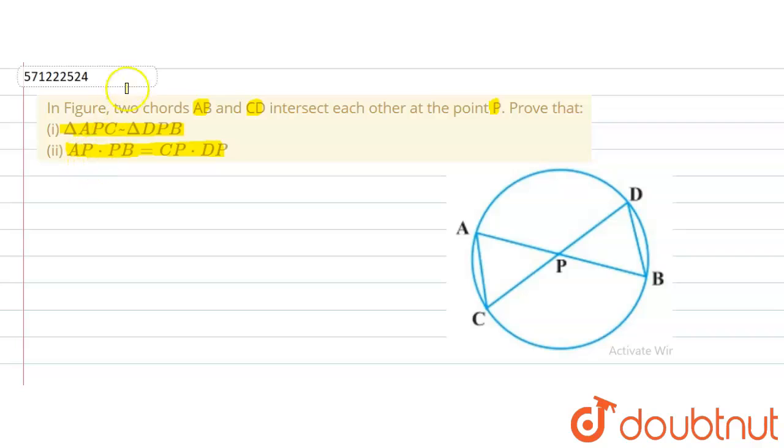As it can be observed from the second part, if we observe it closely, we can see that what it actually means is AP divided by DP or this DP can come to the left hand side of the equation and get divided, will be equal to CP divided by PB.